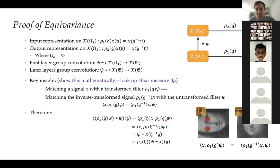We take our signal x, apply element h, convolve, and evaluate at element g. By definition it's the inner product between the transformed x and a transformed filter ψ. Using the property we derived, we move the signal transformation to the filter side. Because ρ₁ is a representation, we combine ρ₁(h⁻¹)·ρ₁(g) into ρ₁(h⁻¹g). We recognize this as a convolution evaluated at h⁻¹g, which is a regular representation applied to our feature map. That's the proof of equivariance.